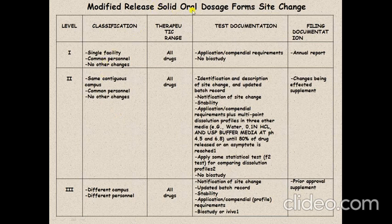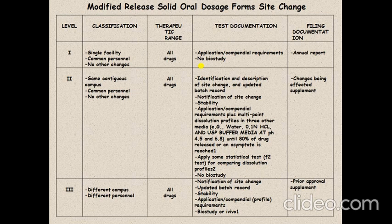For modified release solid oral dosage forms, site changes also have three levels. Level 1 involves a single facility with common personnel and no other changes — meaning only minor changes within a single facility. The test documentation required is the compendial requirement; no bioequivalence study is needed. This level 1 change is filed in the annual report.